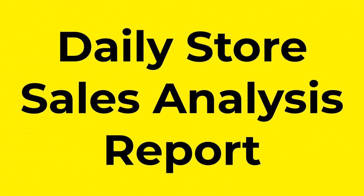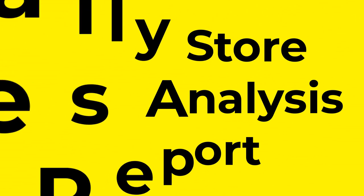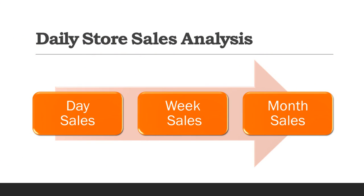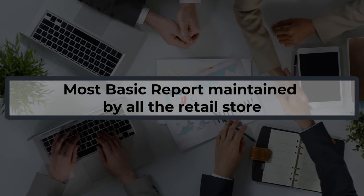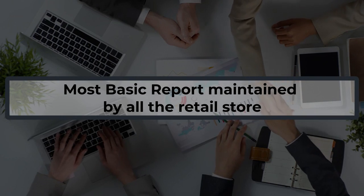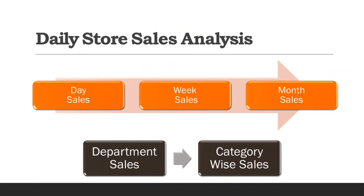The first report is the daily store sales analysis report. This report has all the sales data of a particular store — day sales, week sales, and month sales are all part of this report. This is the most basic report and every retail store will have it. The report also contains department and category-wise sales, specifying which department has achieved how much sales for a specific period of time.